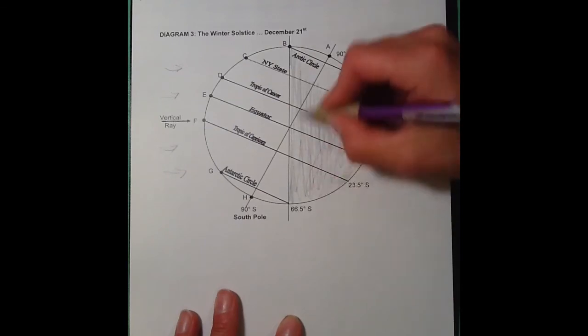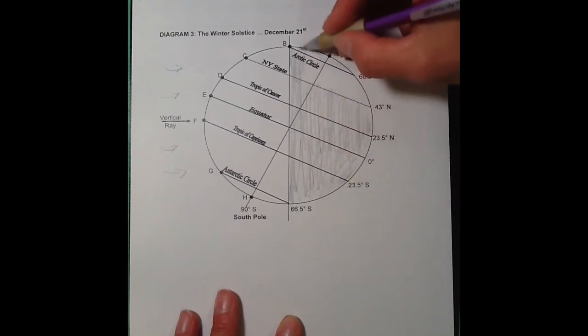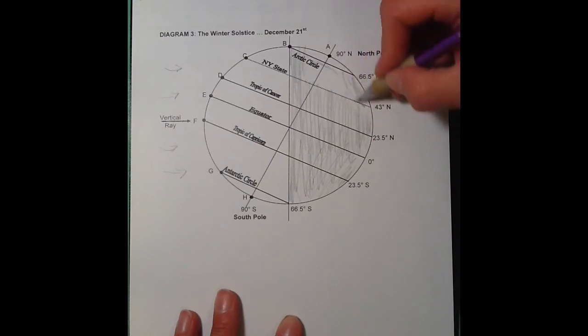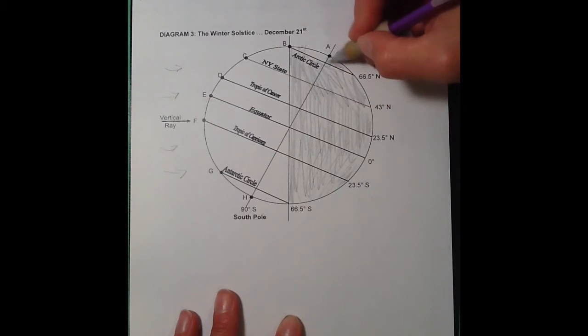Alright, so we've shaded in the Terminator. Now, key things to understand. The circles are where you can get 24 hours of daylight or 24 hours of darkness.